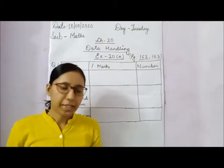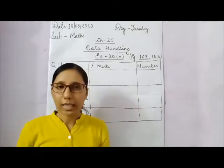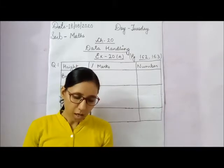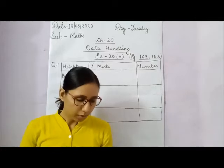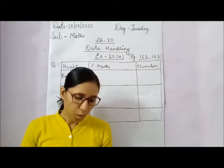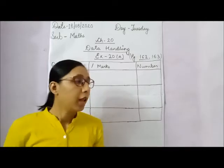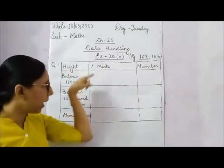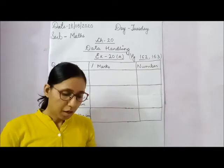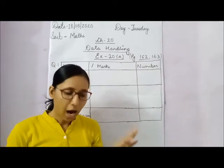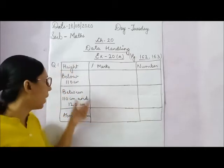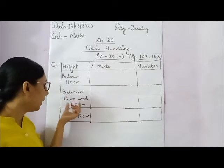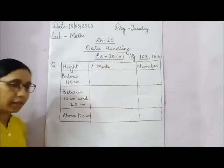Let's solve question number one of exercise 20A, which is given on page number 162. The question is: the heights of the students in Shrikant's class are given in the yellow box. Work with a friend to fill this chart from the data in the box. We have a table showing heights with tally marks, and we need to find how many students are below 110 cm, between 110 and 120 cm, and above 120 cm.